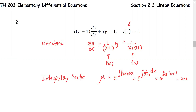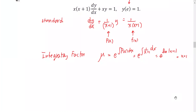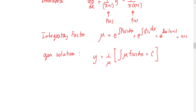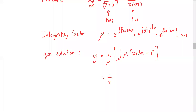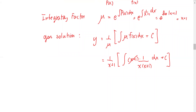The absolute value can be omitted since the initial condition occurs at x equals e, which is a positive value. We substitute into the formula to get the general solution: y equals 1 over mu multiplied by the integral of mu times f(x) dx plus C. That is, 1 over (x+1) multiplied by the integral of (x+1) times 1 over x(x+1) dx plus C. The (x+1) factors cancel, so the integrand becomes just 1 over x dx plus C.